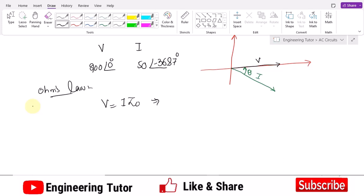The value of Z naught is V divided by I. So Z naught is 200 at 0 degrees divided by 50 at minus 36.87 degrees. That would be 4 ohms with an angle of 36.87 degrees. That is the impedance of my load.